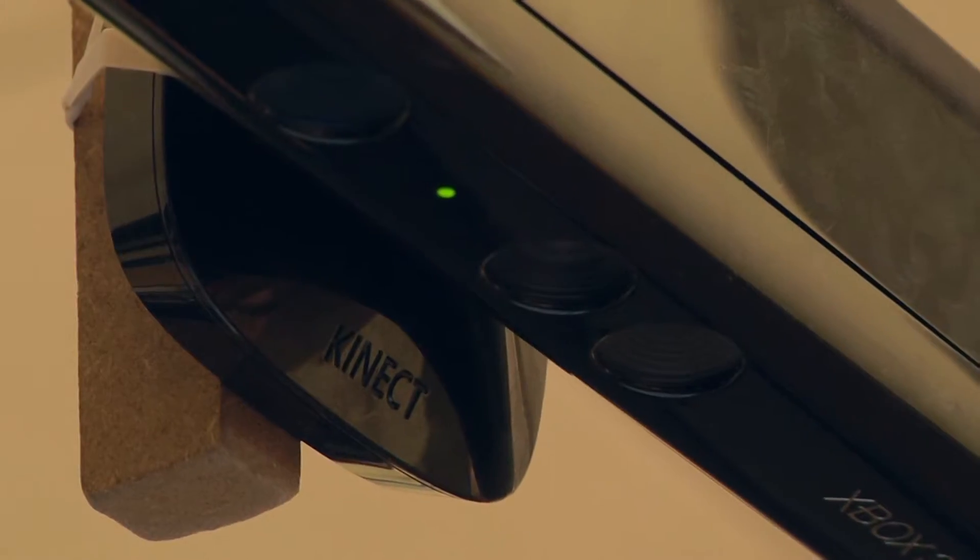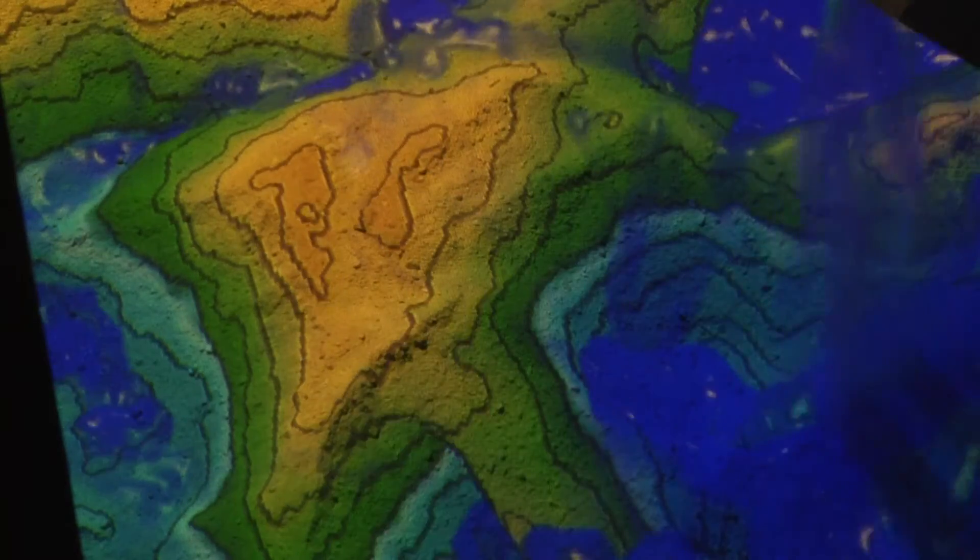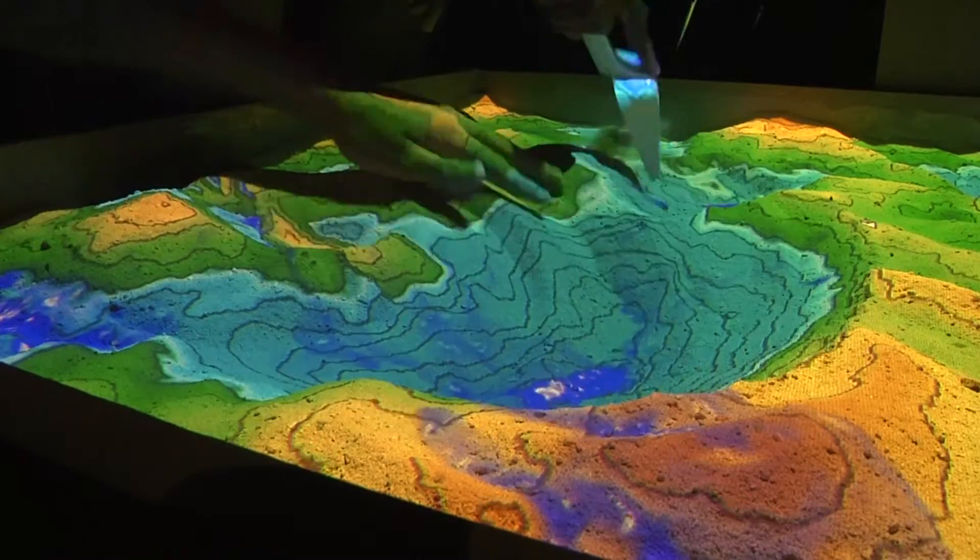Obviously we had to build a sandbox. We had to build this big shelf that goes around it. A hanging Kinect camera is taking an image of heights of the sand, and then it projects a topographical map on the sand to make it interactive. So as the sand is adjusted, it will update the map to reflect the height levels.